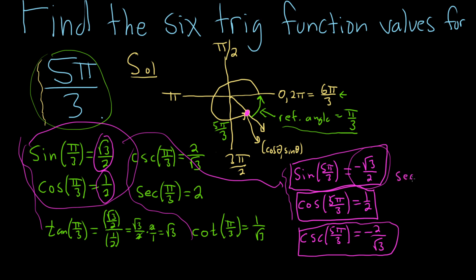How about secant of 5π/3? In this case, we flip this one, the 1 over 2, so that's just going to be 2.